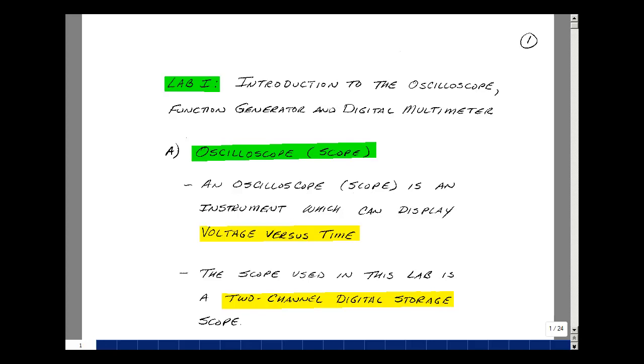This lesson deals with lab number one, which is the introduction to the oscilloscope, function generator, and digital multimeter. These are the tools we're going to be using to take measurements and troubleshooting.